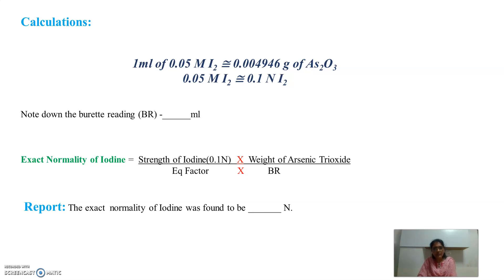To calculate the exact normality of the iodine solution, apply this formula: Normality = (0.1 N × weight of arsenic trioxide) / (equivalent factor × burette reading). Finally, write the report stating the exact normality of the iodine solution found.